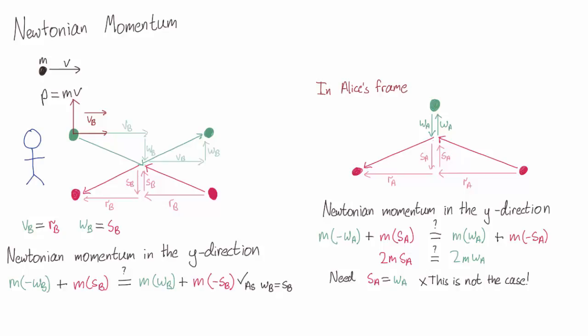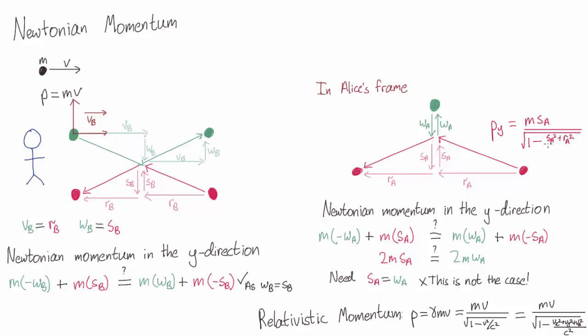It turns out that if we look at how velocities transform between frames, we can get something conserved in both Alice's and Bob's frame. This is p equals gamma mv, where v is the velocity vector of the particle, m is its mass, and gamma is the gamma factor for the particle's total velocity. For the pink particle, its initial momentum is m times sa over square root of 1 minus sa squared plus ra squared. For the green particle, its initial momentum in the y direction is m times minus wa over square root of 1 minus wa squared.